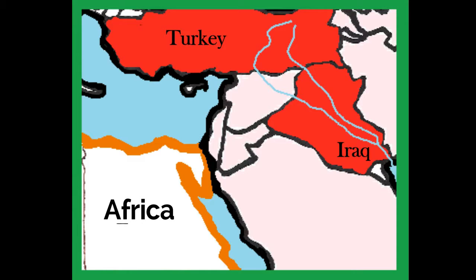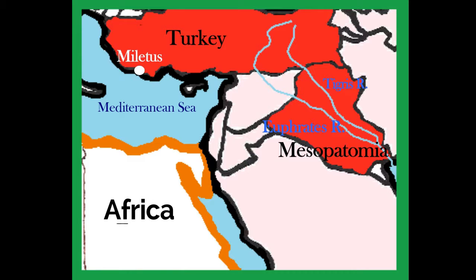If we zoom in even more on Iraq, we'll see two rivers, and they're called the Tigris and Euphrates River. During this time, this region was called Mesopotamia, not Iraq. Just north of Iraq is the country of Turkey. On the western coast of Turkey, near the Mediterranean Sea, is the city of Miletus.